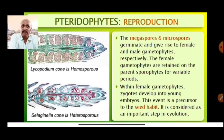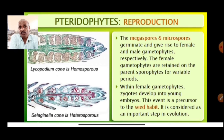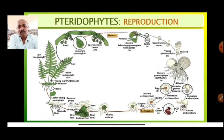The megaspores and microspores germinate and give rise to female and male gametophytes respectively. The female gametophytes are retained on the parental sporophytes for variable periods, and within the female gametophyte, zygotes develop into young embryos. This event is a precursor to the seed habit, and it is considered an important step in evolution.